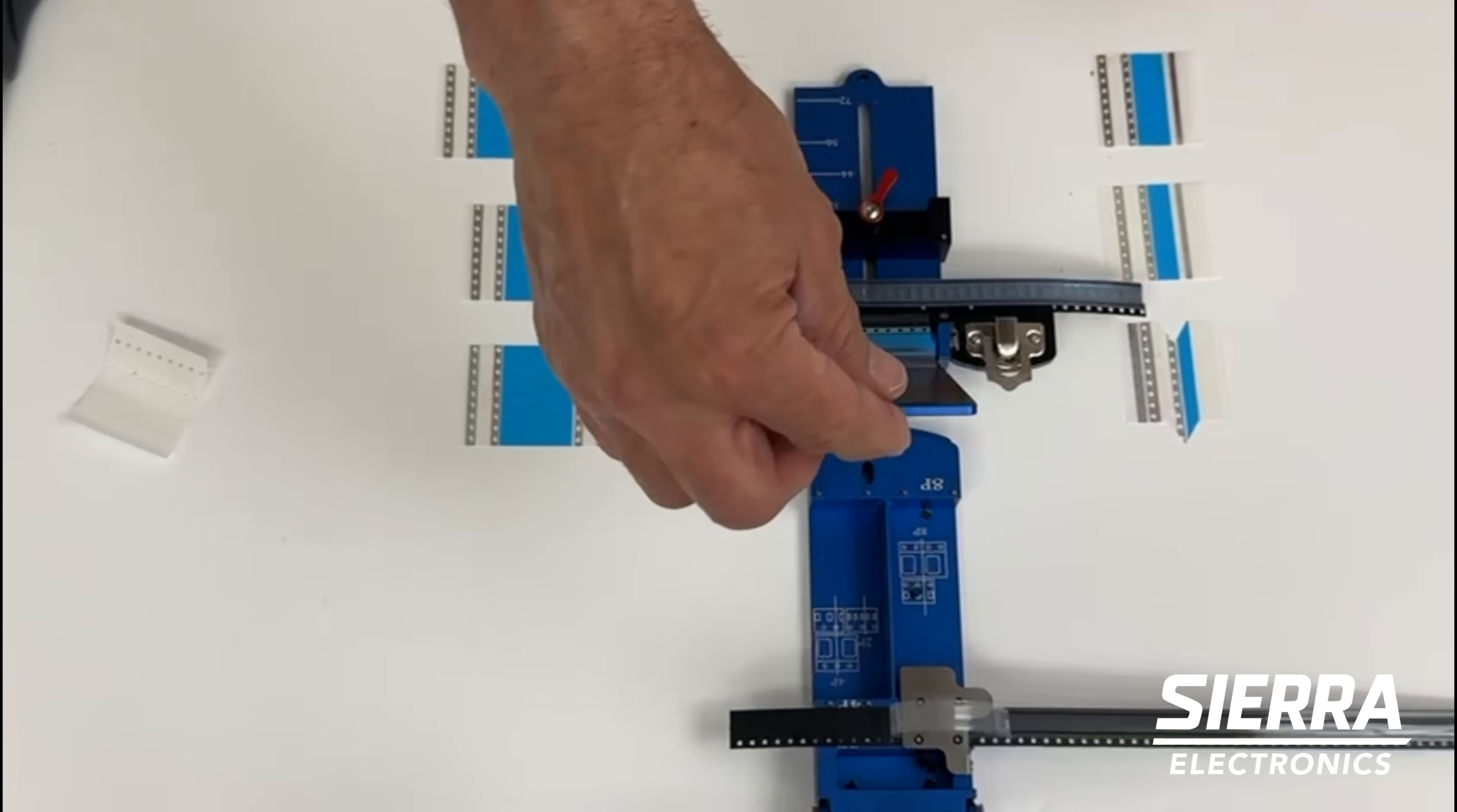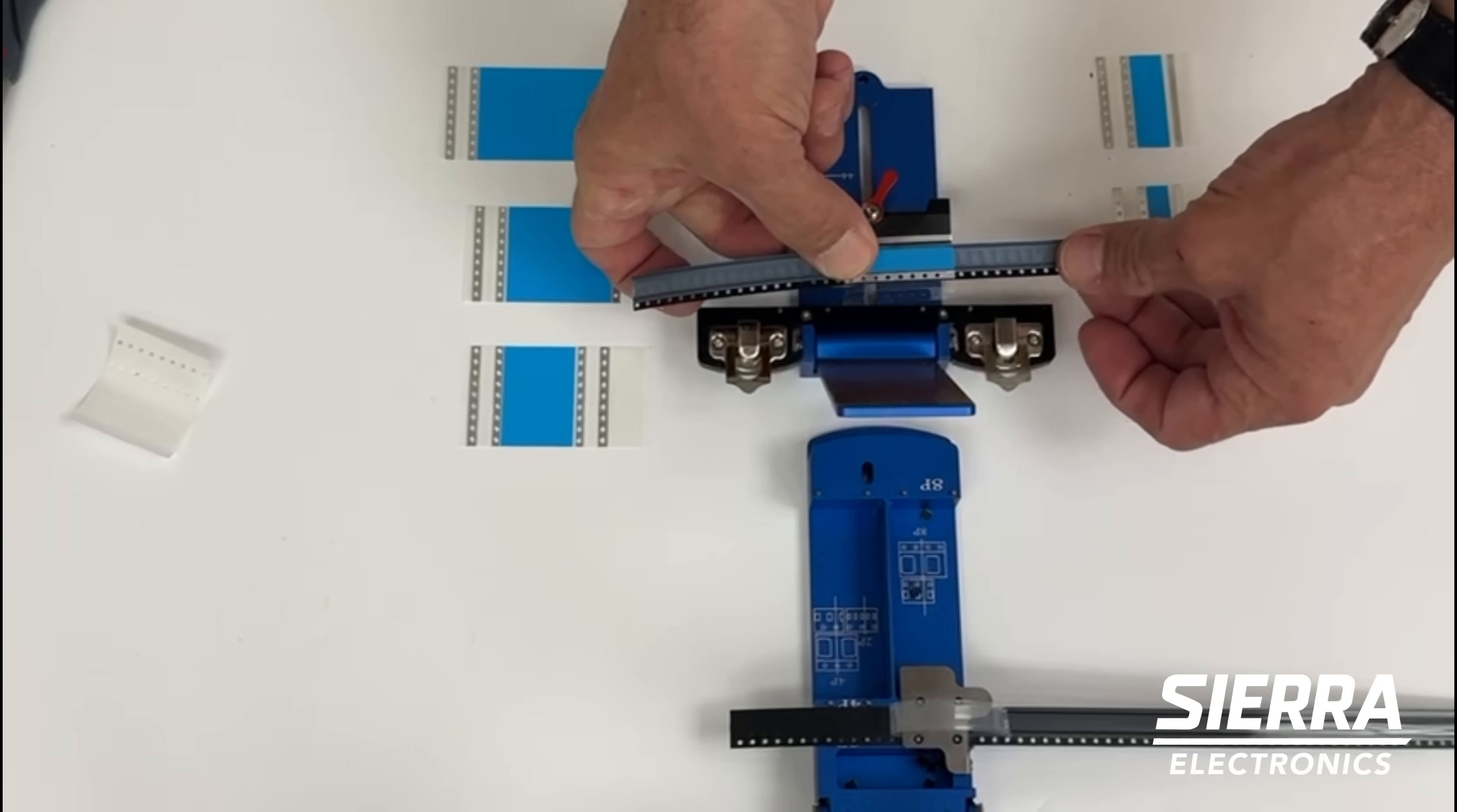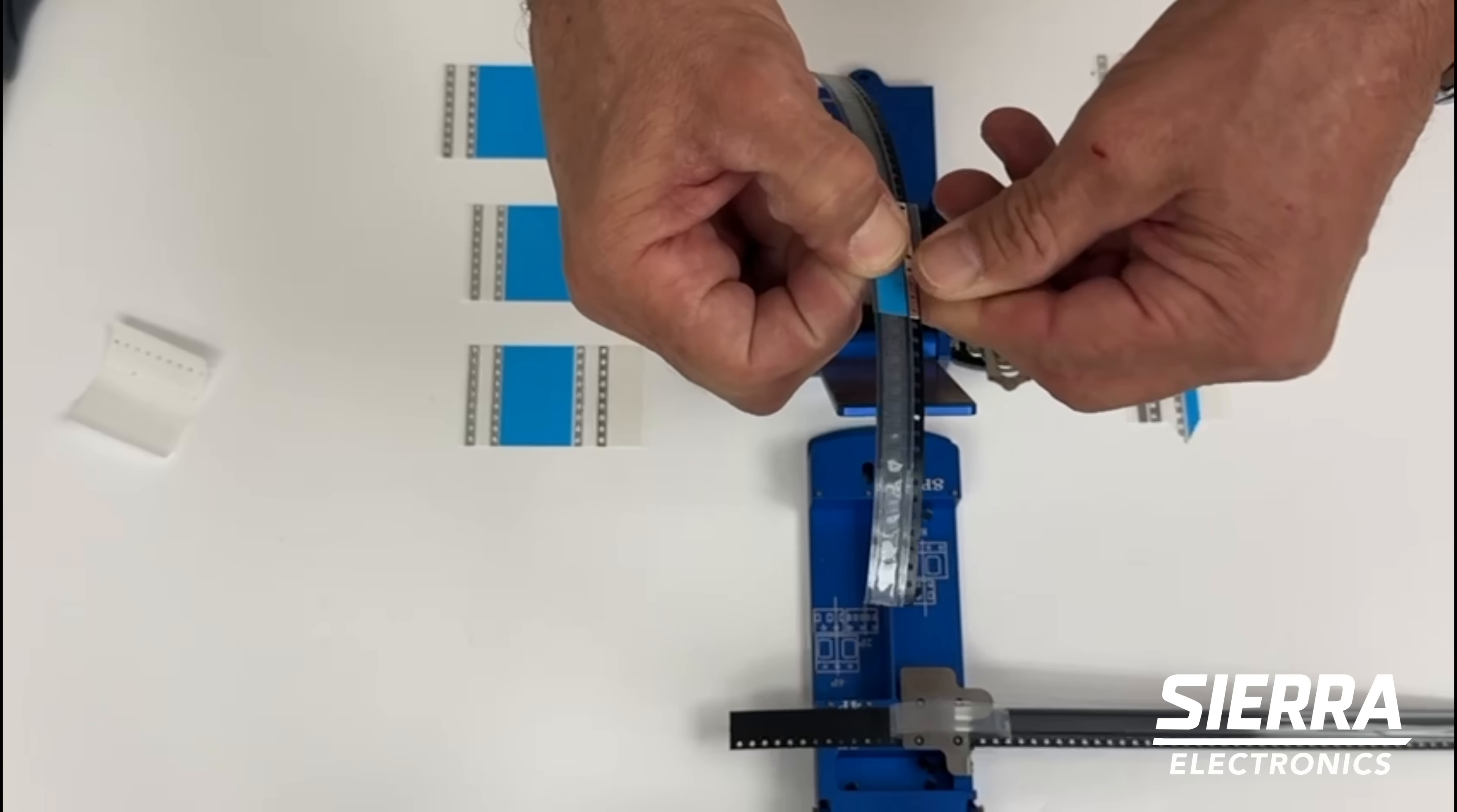Then we'll just fold the jig over. The jig will then place the splice there. We'll remove it from the jig, press firmly on both sides, and then fold over on one side of the perforation.